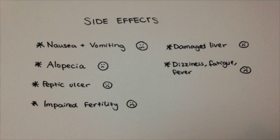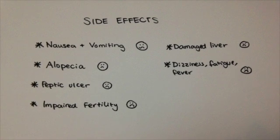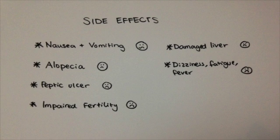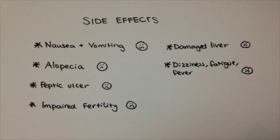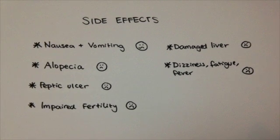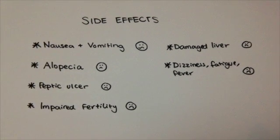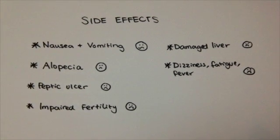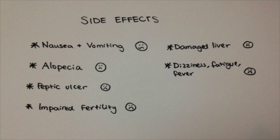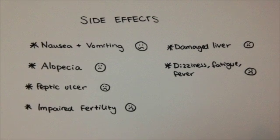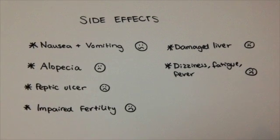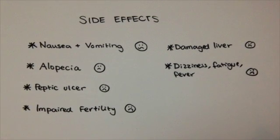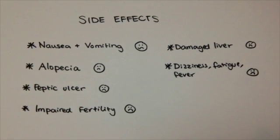The most common side effect of methotrexate is nausea and vomiting. Other common side effects include alopecia, which means hair loss, peptic ulcers, impairment of fertility, damaged liver, dizziness, fatigue, and fever.